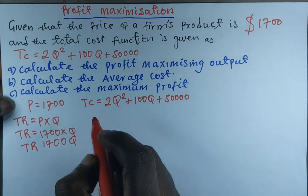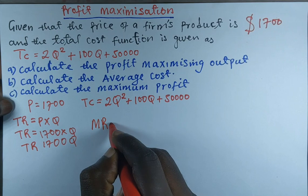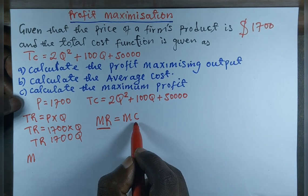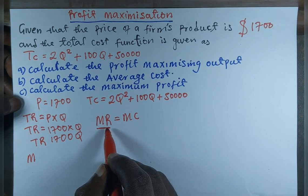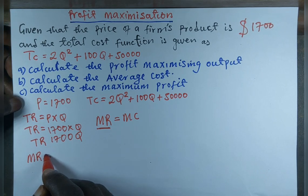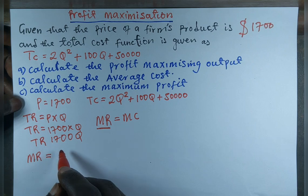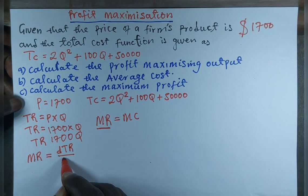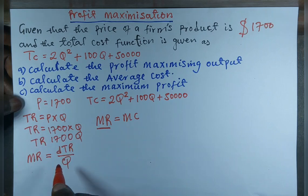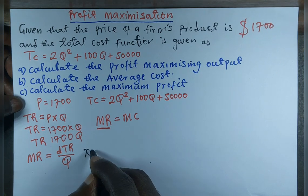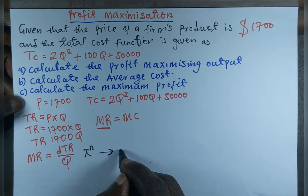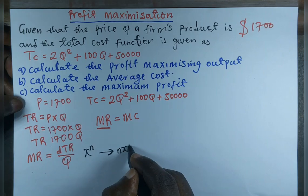We know that profit is maximized where marginal revenue equals marginal cost, so we need to find both marginal revenue and marginal cost. Marginal revenue is the derivative of the total revenue function with respect to quantity. From the power rule, x raised to the power n gives a derivative of n multiplied by x raised to the power n minus 1.